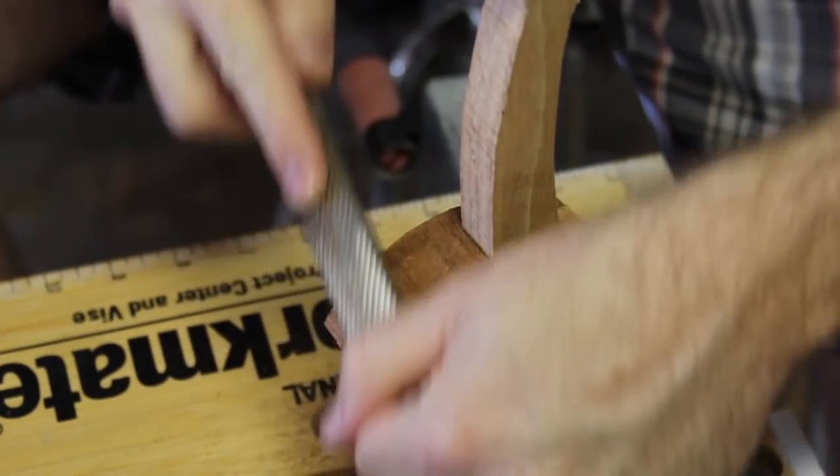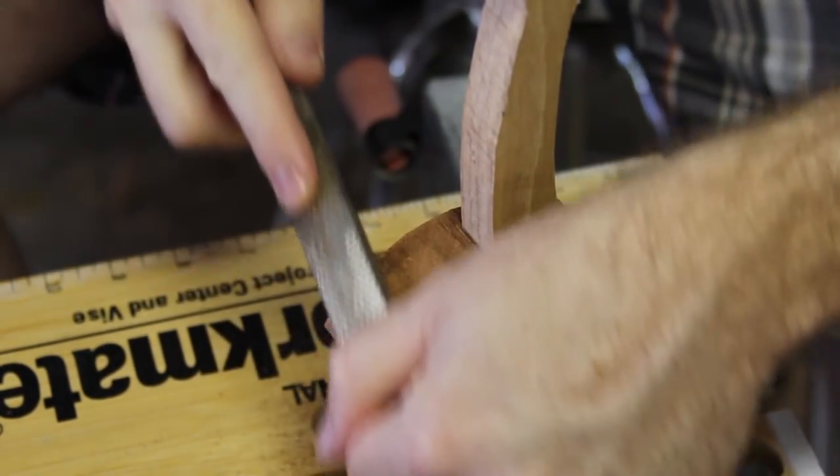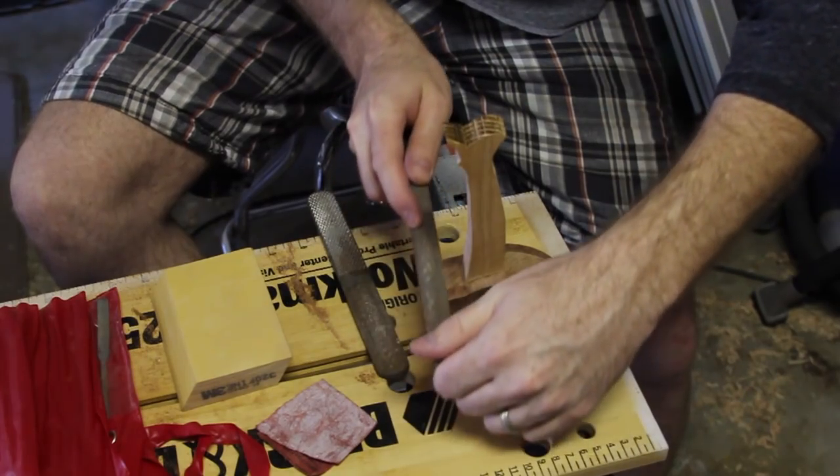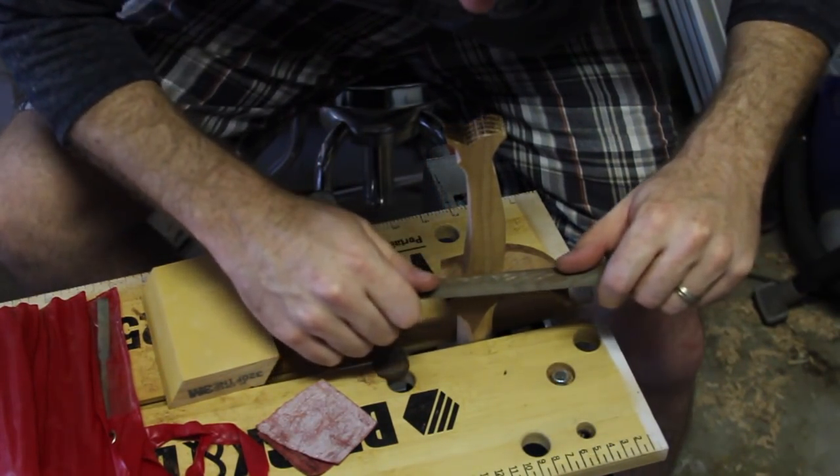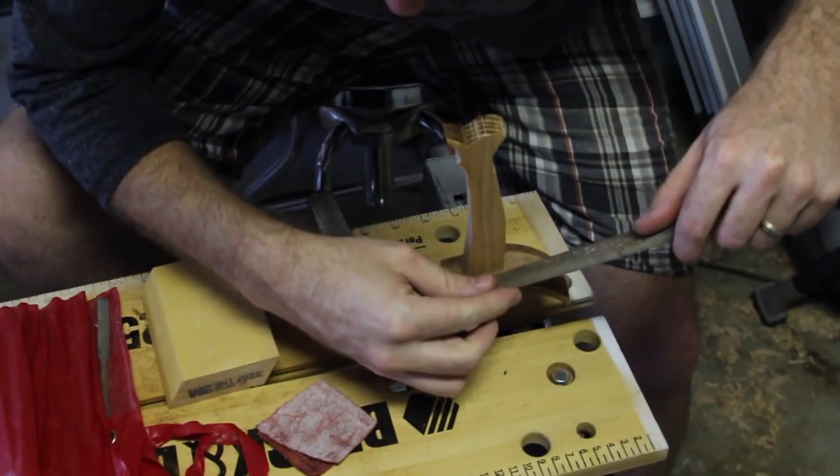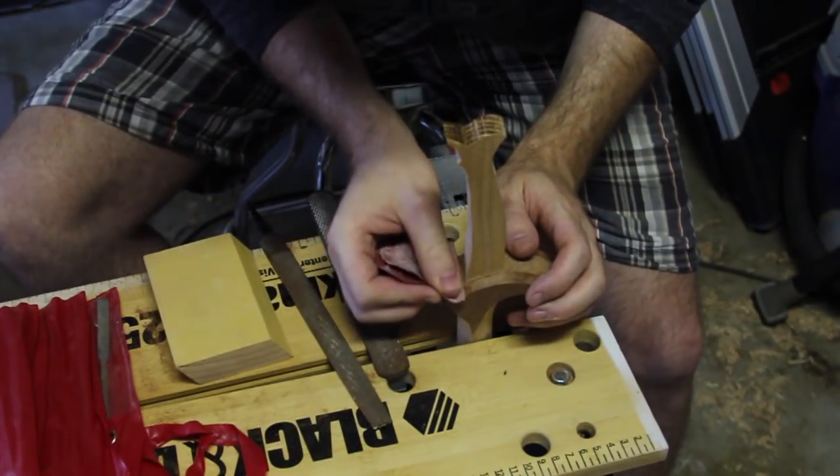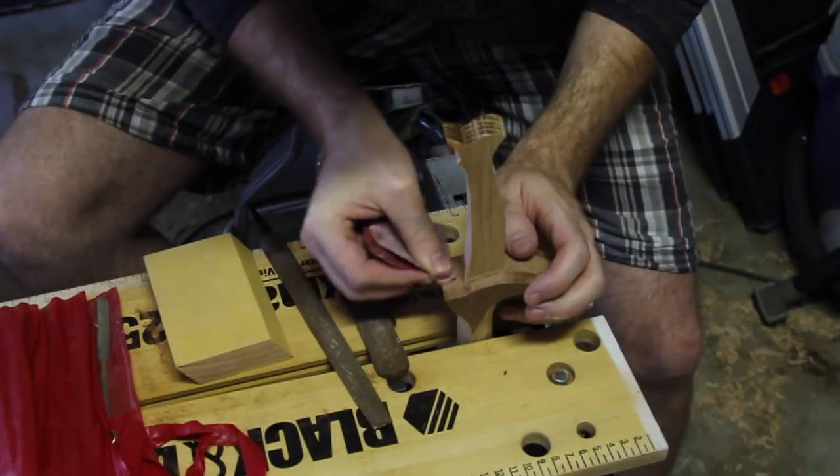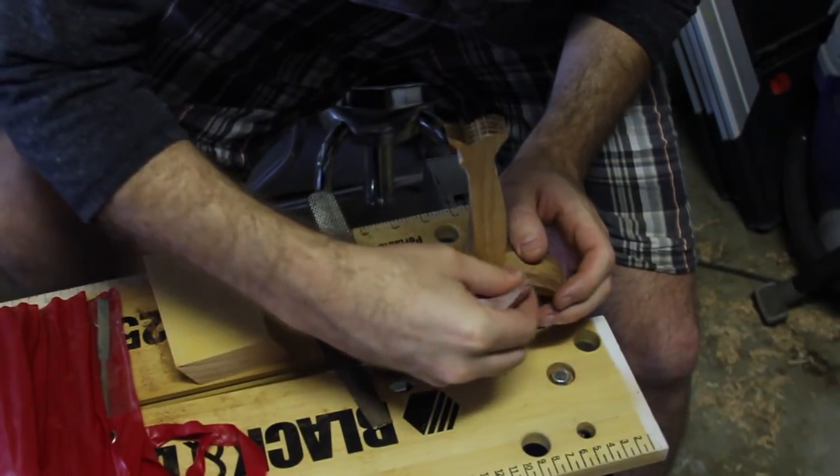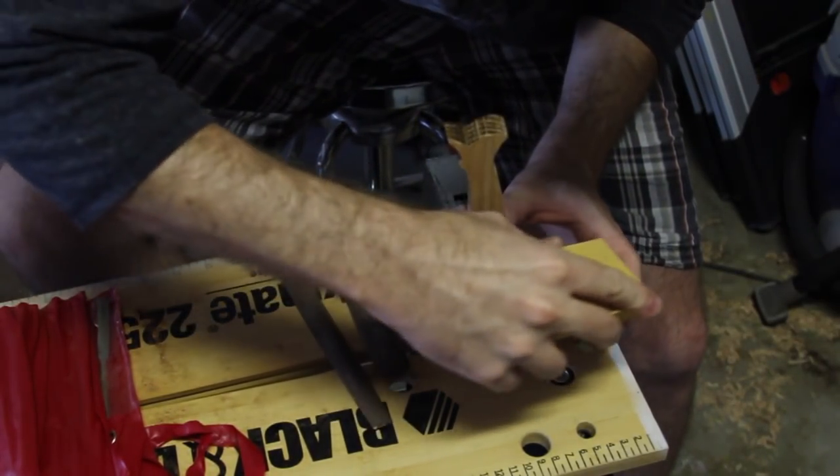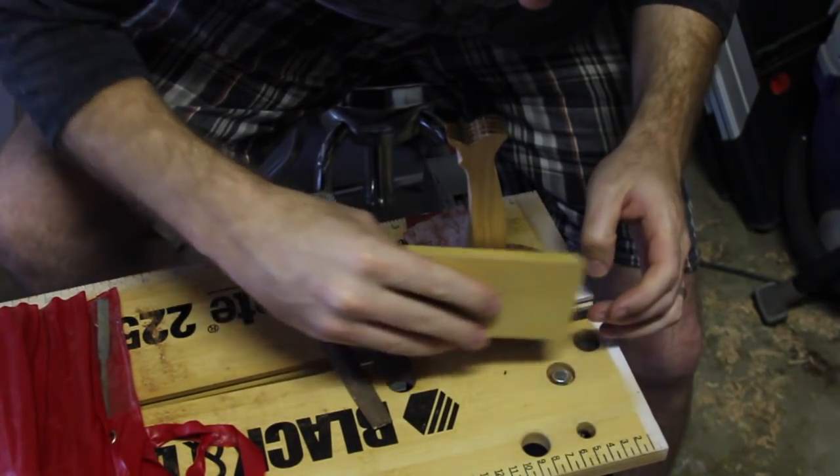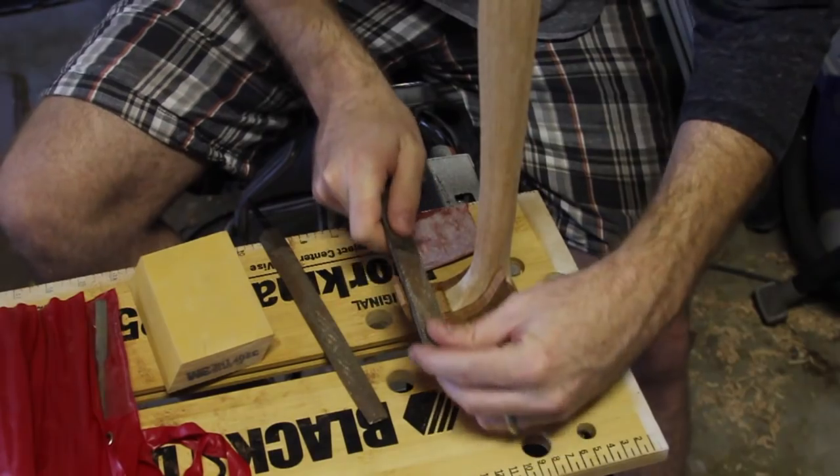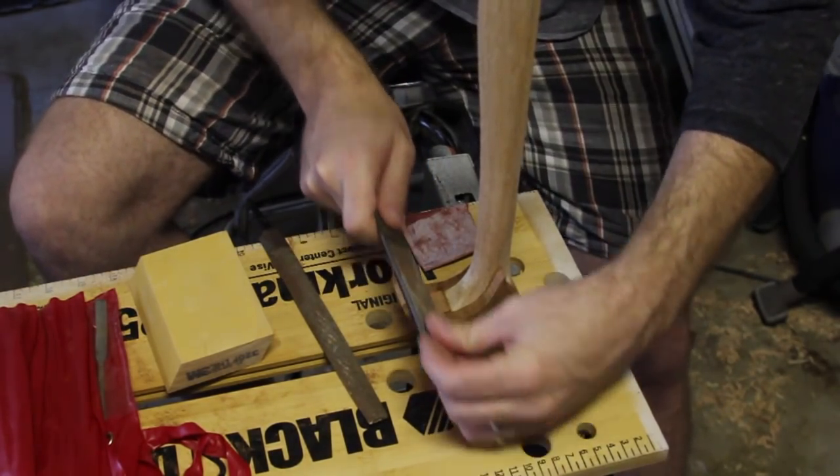It was pretty much the same process. Start with the aggressive cut, and slowly work my way to a finer file. Then I finished off with sandpaper, working my way up to a 320 grit sanding pad. Then I flipped the sword over and did the same thing on the top side.